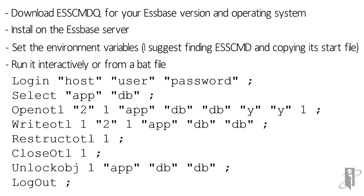Here are the commands for running it on a live application. You log into the host with your username and password. You select the application and database. You open the outline, write the outline, restructure it, close it, unlock it, and then log out. The nice thing about this is it doesn't impact anything that's going on, so you can run this while users aren't on the system, in the middle of the night. It really doesn't matter — it can be done almost any time.